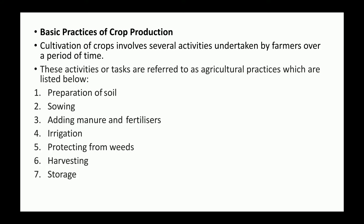Cultivation of crops involves several activities undertaken by the farmer over a period of time. The basic practices of crop production are: preparation of soil, sowing, adding manure and fertilizers, irrigation, protecting from weeds, harvesting, and lastly, number seven, storage.